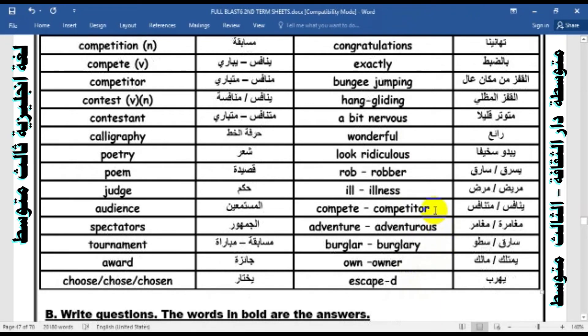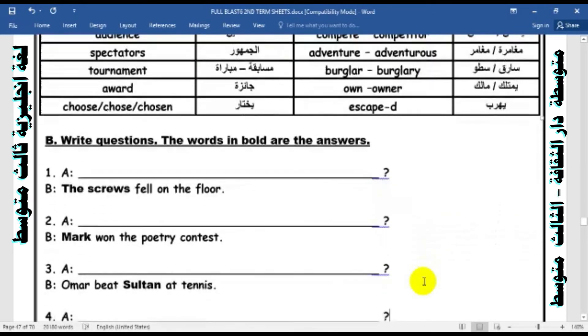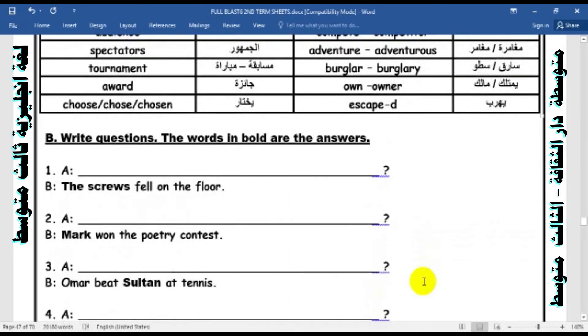After that, exercise B: write questions. Try to form a question by using who, what, and which. We have learned how to form a question by using who, what, or which.